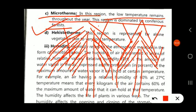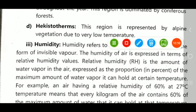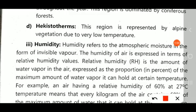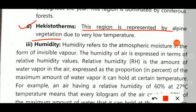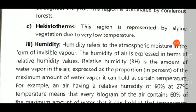The next category is Hekistotherm. This region is represented by the Alpine regions, where temperatures are extremely low. We will next discuss the climatic factors of humidity and wind. I hope you understand. Thank you.